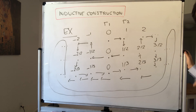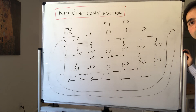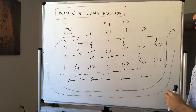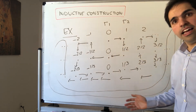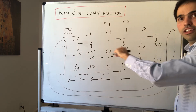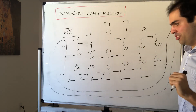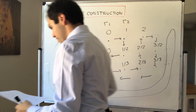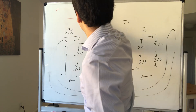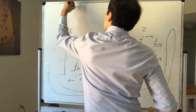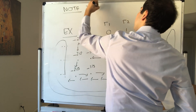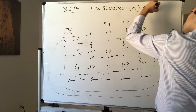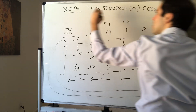By the way, this may be familiar because this was the sequence used to show that the rational numbers are countable — and there's a video on this as well. One thing to understand is that the sequence r_n really goes through all the rational numbers.